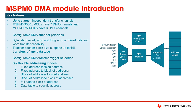The DMA module has four transfer modes, including single data transfer mode, block transfer mode, repeated single data transfer mode, and repeated block transfer mode. Each DMA channel can be individually configured for the corresponding transfer mode.